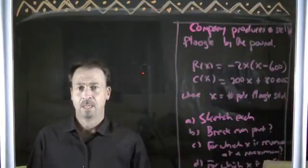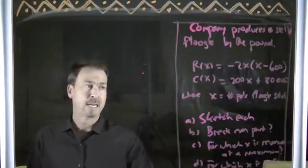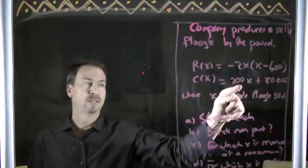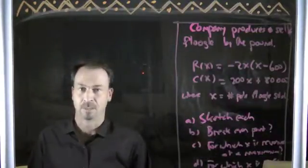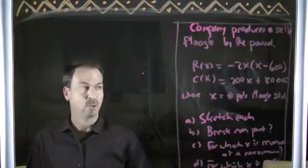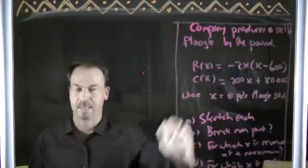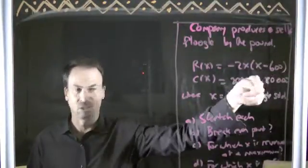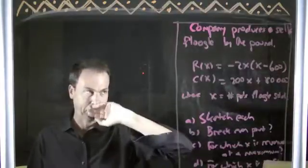What does that mean? So to make some flugel, it obviously costs some money, and they found that if you want to make 10 pounds of flugel, it's going to cost them 200 times 10 plus $80,000. Or to make 40 pounds of flugel, it's going to cost them 200 times 40 plus $80,000. I guess the $80,000 is like the initial cost of factory or something.